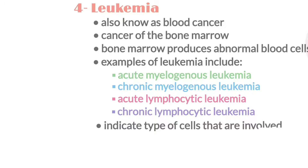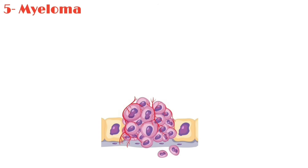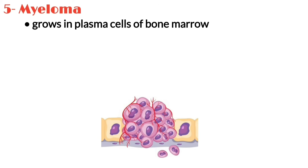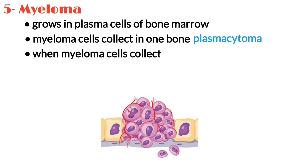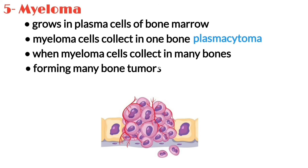The last type is myeloma. A myeloma grows in the plasma cells of bone marrow. In some cases, the myeloma cells collect in one bone and form a single tumor called a plasmacytoma. However, in other cases, the myeloma cells collect in many bones, forming many bone tumors. This is called multiple myeloma.